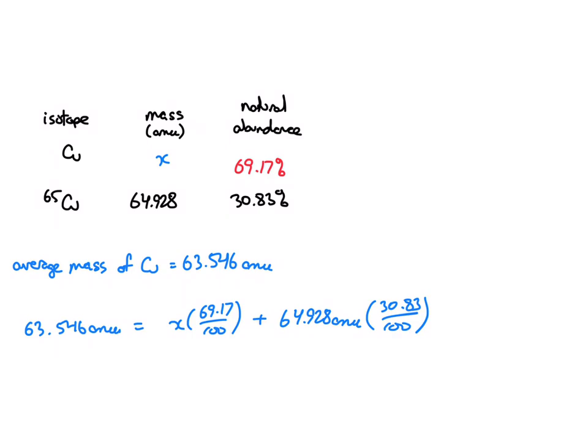So let's solve this for x here, put this into my equation solver. So I'm going to have 63.546 equals 0.6917x plus this would be 64.928 times 30.83, 20.170.